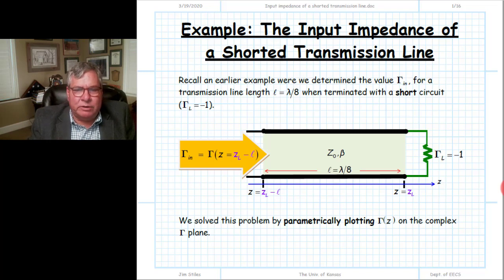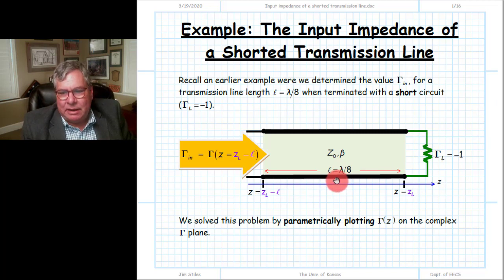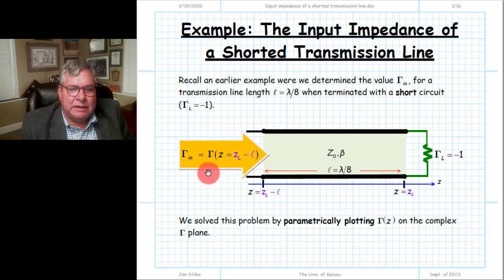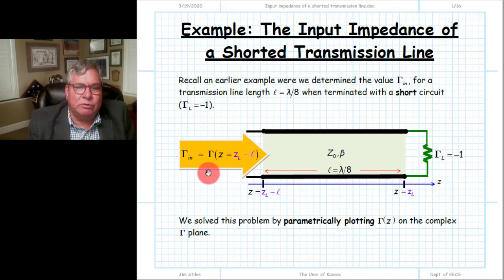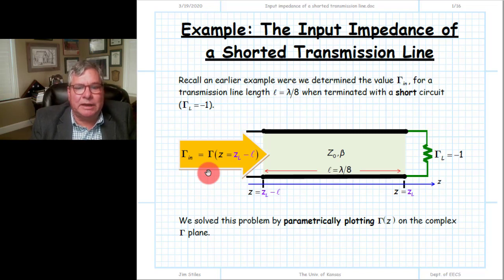Let's return and review an example covered several sections ago. We were looking at a transmission line with an electrical length of one-eighth lambda, terminated with a short circuit load. Its load reflection coefficient is minus one, and the question is: what is the input reflection coefficient? We chose to solve this problem graphically by plotting parametrically the reflection coefficient function on the complex gamma plane.